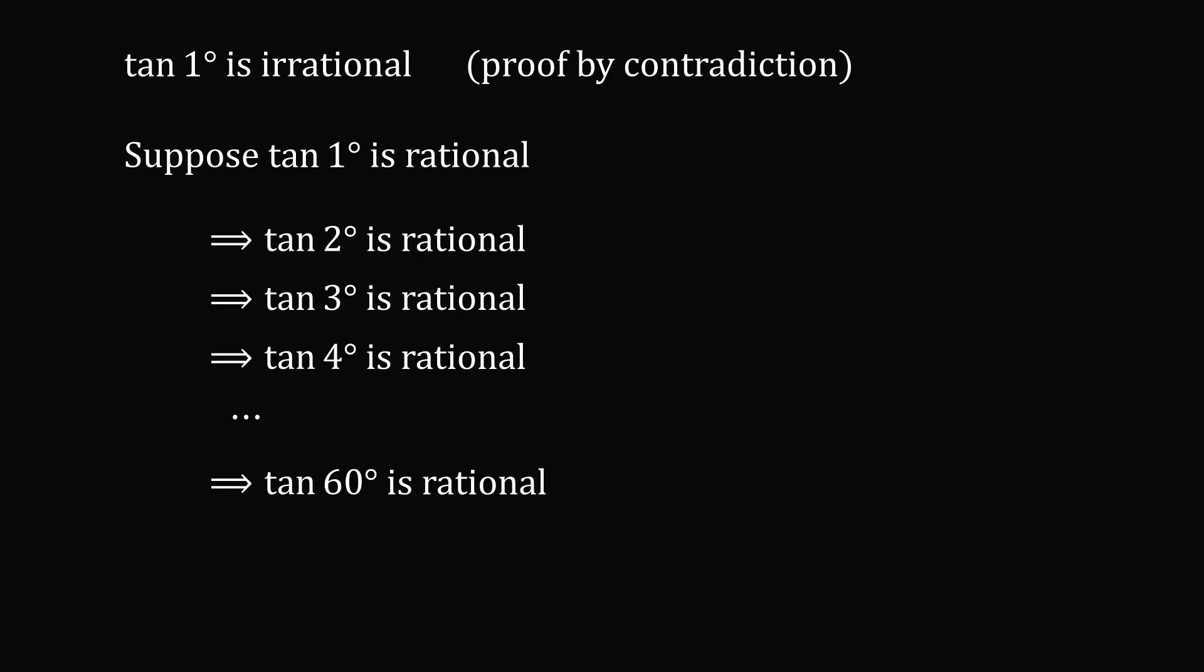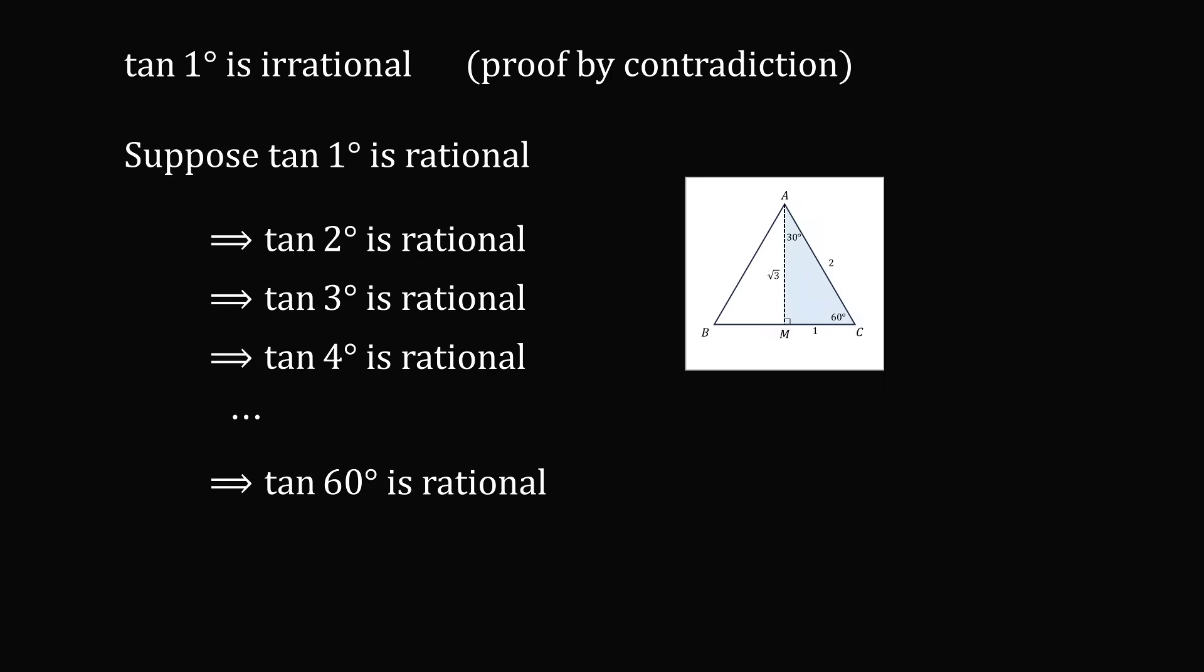But now, let's pull up a 30-60-90 right triangle. We know that tangent of 60 degrees is equal to √3, which we proved is an irrational number. So, we have a contradiction. It is not possible that tangent of one degree is rational. It must be the case that tangent of one degree is irrational. Q.E.D.